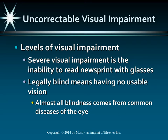Legal blindness in the United States means that you have a visual acuity of 20 over 200 or less in the better eye with correction. A lot of reasons for blindness in the United States, but many of them are preventable causes, such as cataracts, glaucoma, macular degeneration, and diabetic retinopathy. Only 4% of blindness in the United States is an actual result of injury.